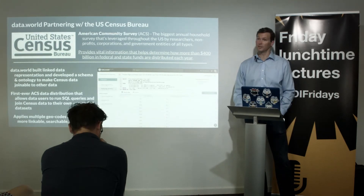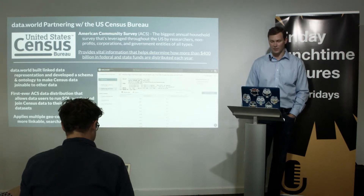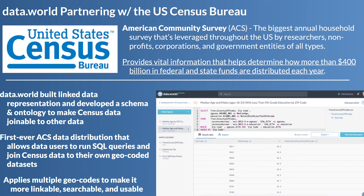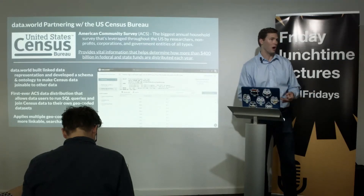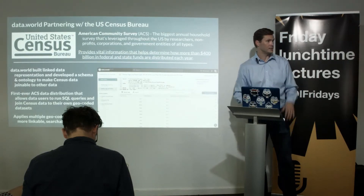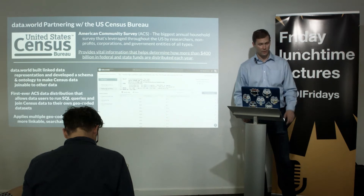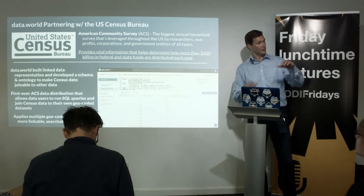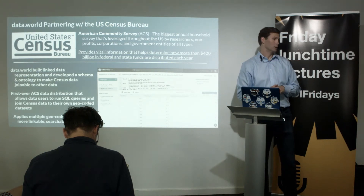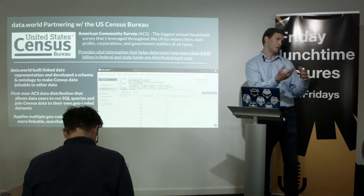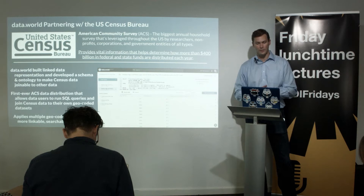Another partnership was with the US Census, which is one of the most valuable data assets the US government has. It provides vital information that helps determine how more than $400 billion in federal and state funds are distributed each year. The American Community Survey is their big annual household survey leveraged by researchers, nonprofits, government entities, and corporations. We worked closely with them and built the first-ever linked data representation of the ACS survey, placing a schema and ontology on top of it to make it much more linkable to other datasets. Previously it was an arduous process — unclean data downloadable only via FTP.